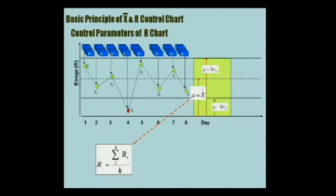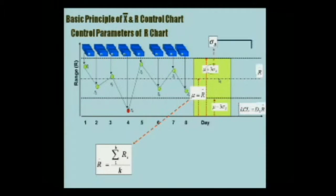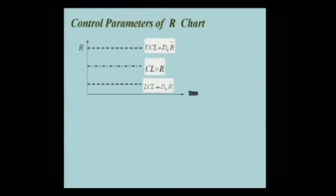For the range chart, the center line will be the average of all ranges, R-bar. The upper and lower control limits will deviate from the center by plus or minus three sigma of the range. We will make this very simple: all what you have to do is use a constant D4 times the average range to get the upper control limit, and a constant D3 times the average range to get the lower control limit. So the calculations have actually been made simpler than we anticipate.